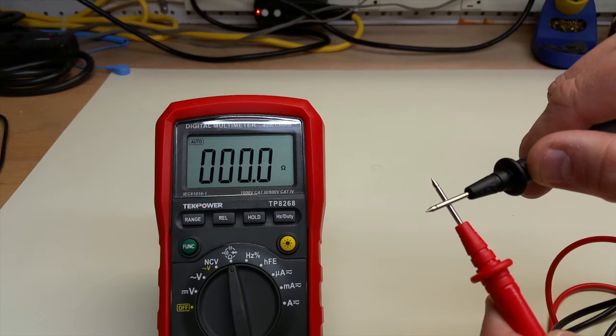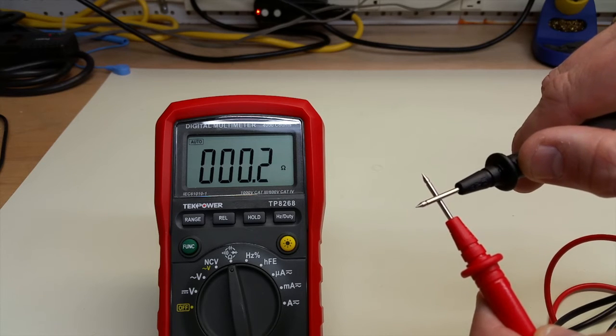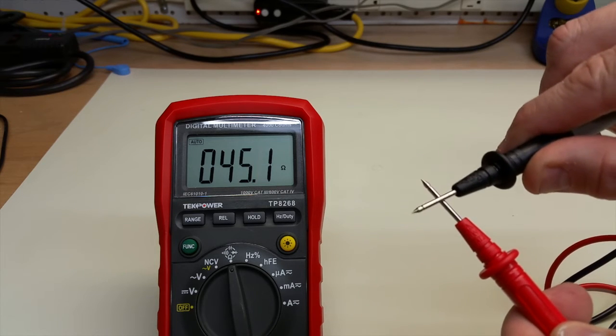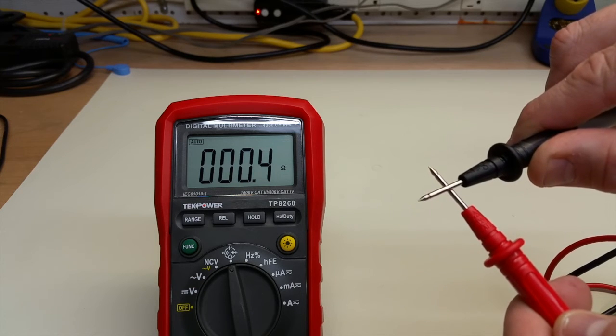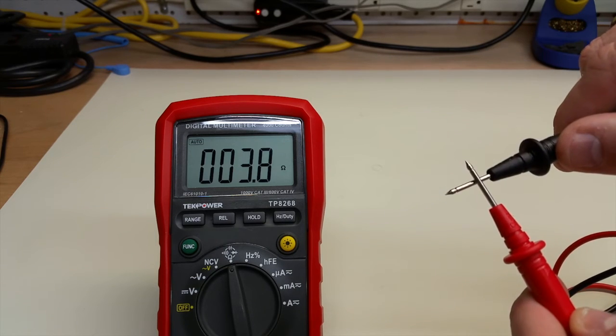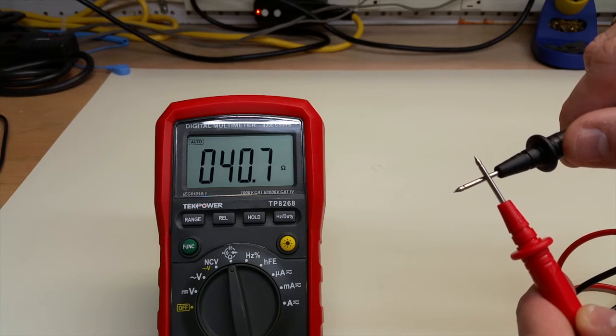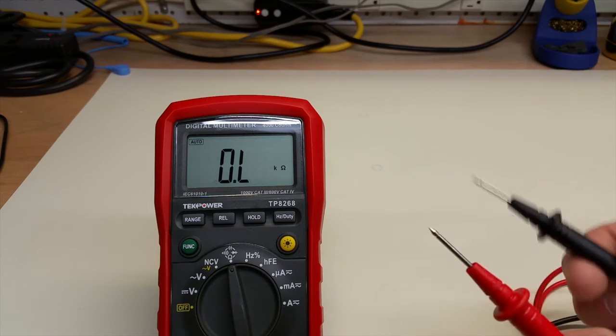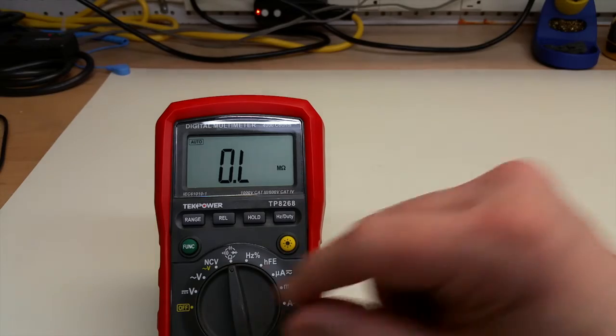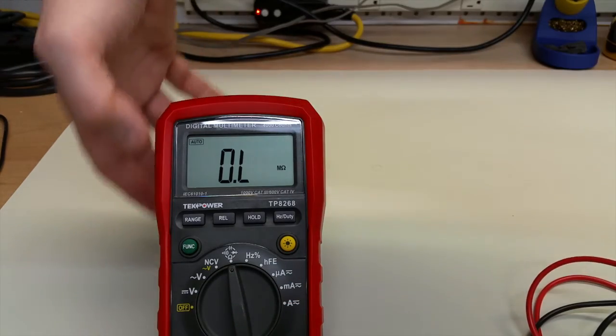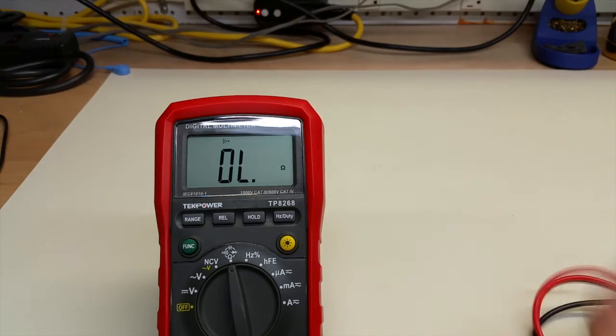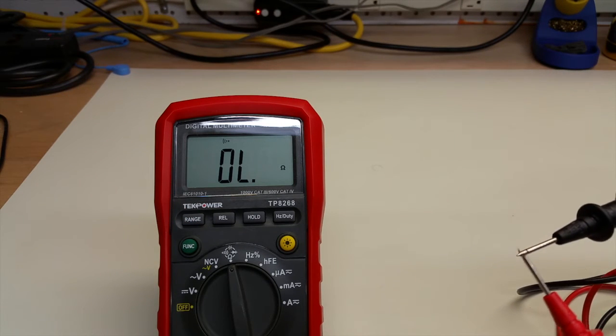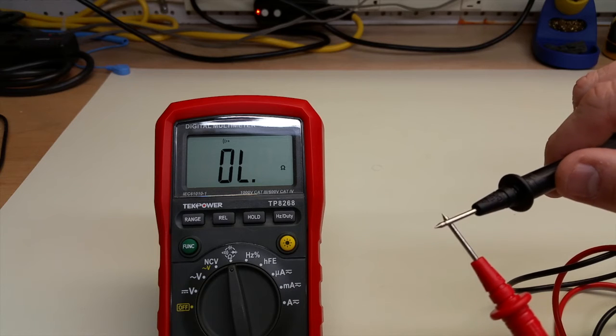And you see generally no problems until you start kind of moving them around. And then it's yeah, not the best. But you know, the leads are what they are. Let's now go to function and look at the continuity tester. And that'll give you a little bit more insight into the leads.